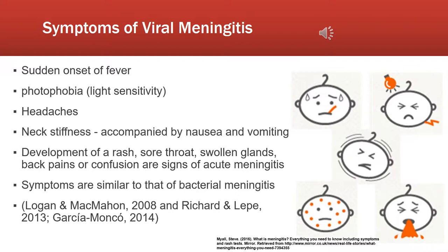Other symptoms such as back pain, states of confusion, sore throat, rashes, and swollen glands are usually an early sign of acute meningitis, which can be accompanied by a state of unconsciousness or a coma.